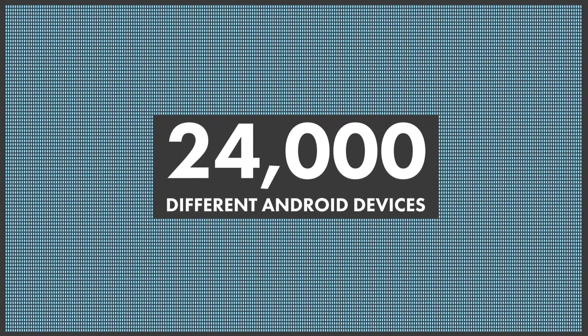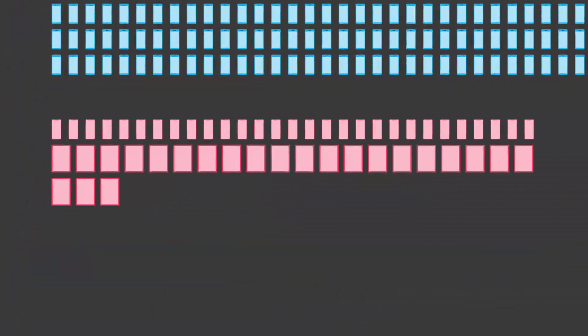Fragmentation refers to the huge number of different devices that are out there. I couldn't find more up-to-date info than 2015, when there were already more than 24,000 different types of Android devices in the world. Compare that to Apple in 2021 — there are a total of 29 iPhones, 25 iPads, and 7 iPod Touches that have ever been available. So with Android, you're dealing with an unfathomable number of different hardware configurations, whereas on iOS it actually would be within reason to have a big enough team of testers to check out an app on every possible device.